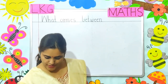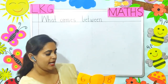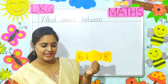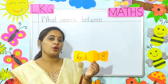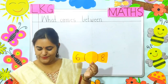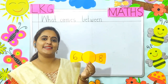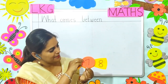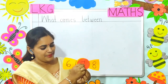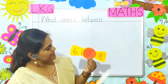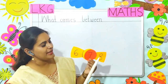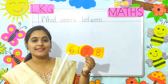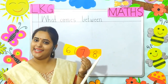Let's see one more example. Here the numbers given are 6 and 8. So if you count after 6, what number will come, children? 6, 7. Yes, so here the number 7 will come. So now the numbers are 6, 7, 8 — so 7 comes in between 6 and 8.